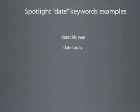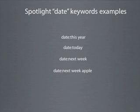"date:today" will find any files, folders, or iCal events for today. "date:next week" will list any iCal events for next week. And in the same way we can combine phrases with standard kind keywords, we can do the same for date — so "date:next week Apple" will find any iCal events for next week that relate to Apple.